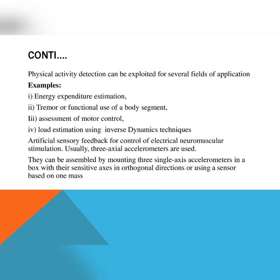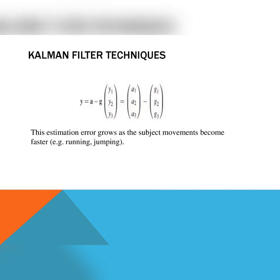Physical activity detection can be exploited for several fields of application: energy expenditure estimation, tremor or functional use of body segments, assessment of motor control, load estimation using inverse dynamic techniques, and artificial sensory feedback for the control of electrical neuromuscular stimulation. Usually, three-axial accelerometers are used. They can be assembled by mounting three single-axis accelerometers in a box with their sensitive axes in orthogonal directions or using a single monolithic sensor. Here, y is equal to a minus g, where a represents the accelerometer and g represents the gyroscope.